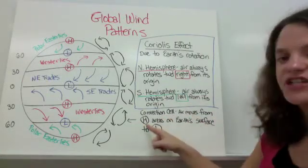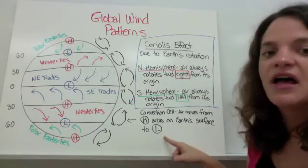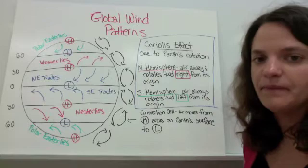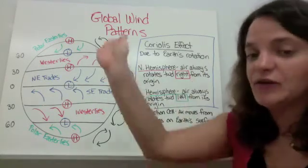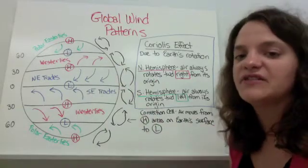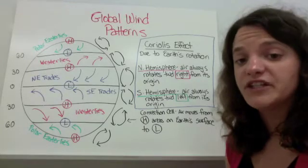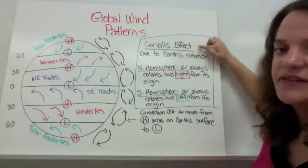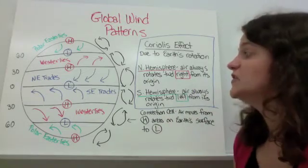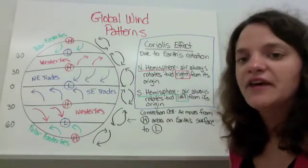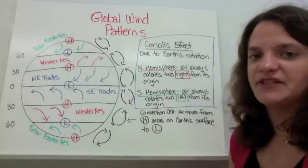Air moves from high pressure areas on Earth's surface to low pressure areas. In the northern hemisphere, air is always rotating toward the right, and in the southern hemisphere it rotates toward the left from its origin. This is due to the Coriolis effect — a rotational effect caused by Earth's rotation that makes things veer right in the northern hemisphere and veer left in the southern hemisphere.